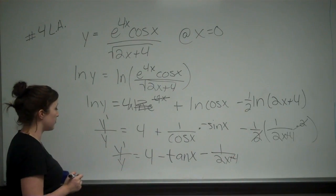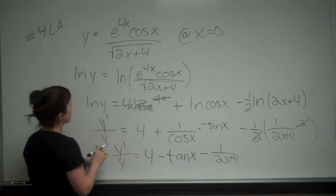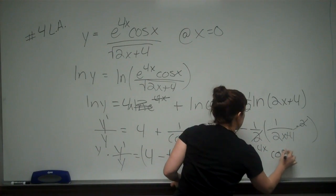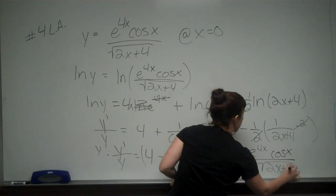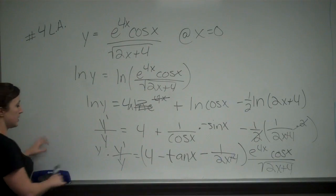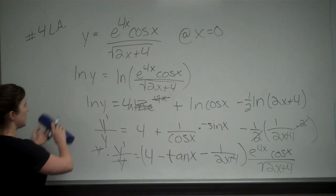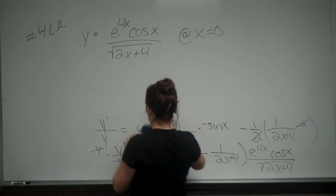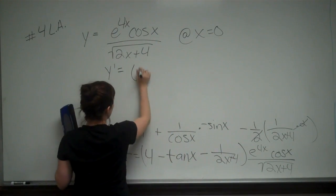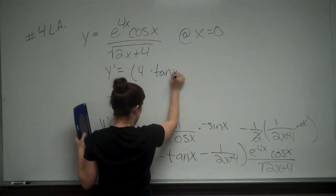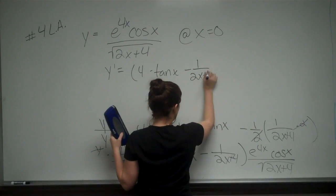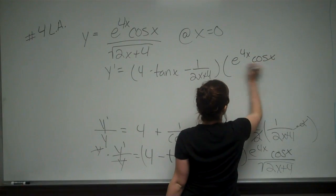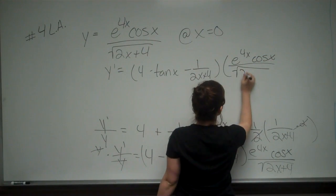We're just looking for y prime, so we multiply both sides by y. Remember, our y is the whole original equation: e to the 4x cosine x over the square root of 2x plus 4. So y prime equals 4 minus tangent x minus 1 over 2x plus 4, times e to the 4x cosine x over the square root of 2x plus 4.